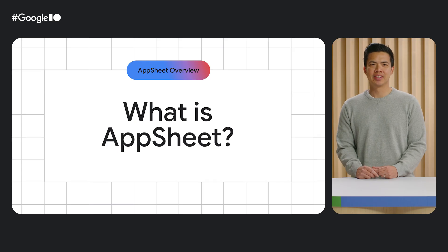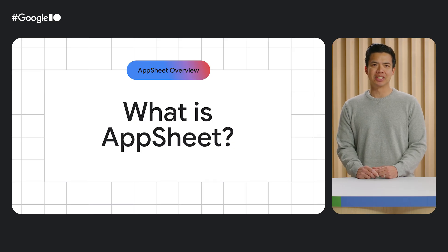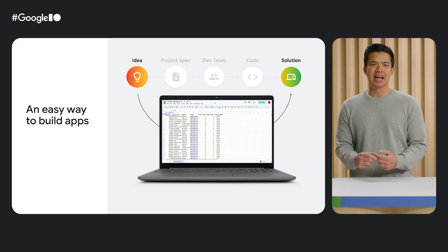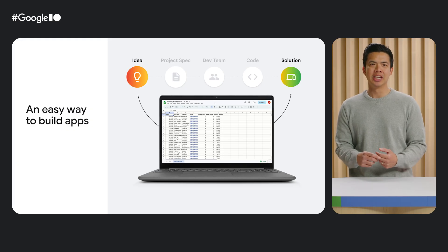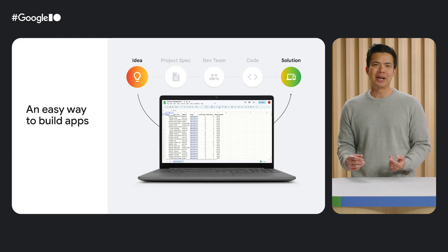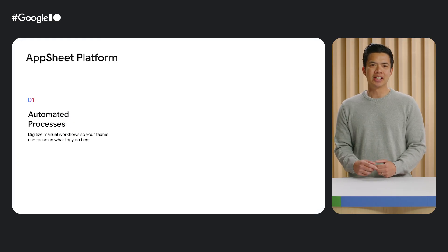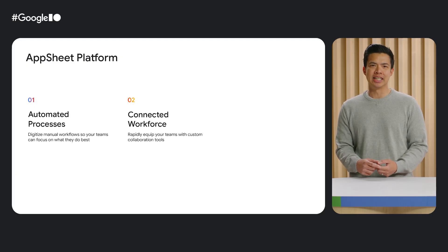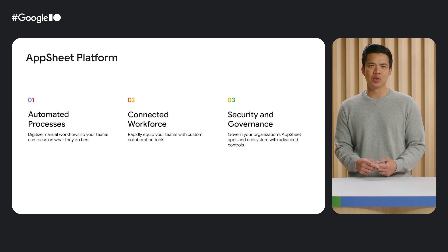So what is AppSheet? AppSheet is Google's AI-powered, no-code platform that empowers teams to quickly build mobile apps and automated workflows. AppSheet solutions are built directly on existing data from Google Workspace, GCP, or anywhere else. And critically, AppSheet also empowers you with essential security and governance controls built right in. In short, AppSheet facilitates business workflow automation, improves team coordination, and strengthens security and governance frameworks.